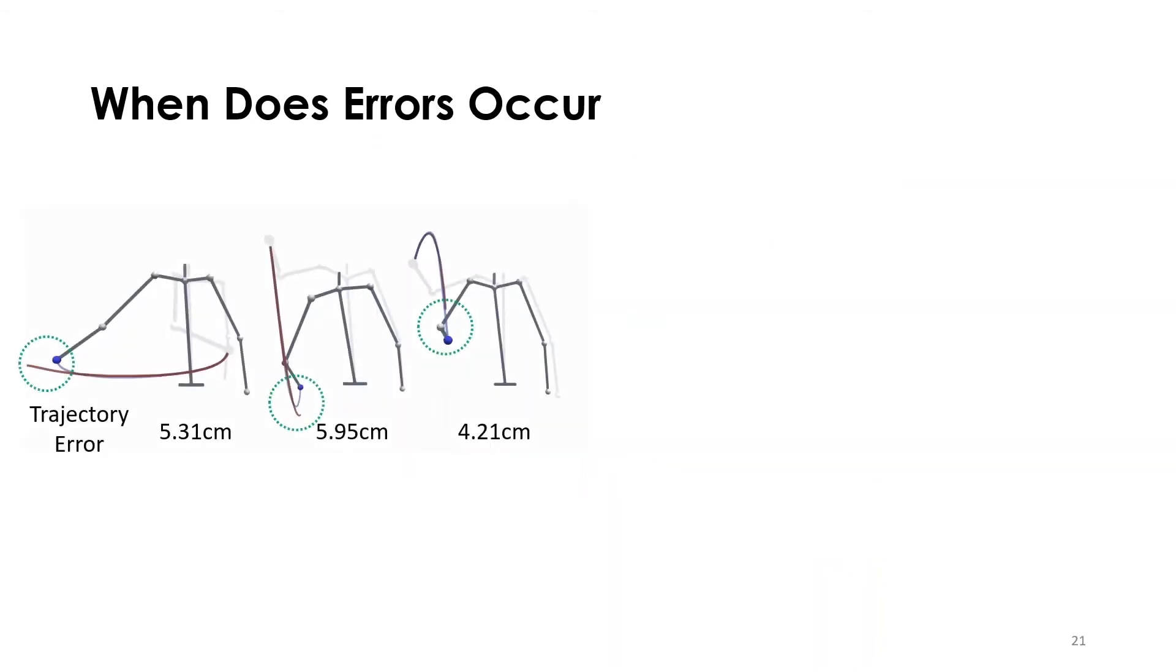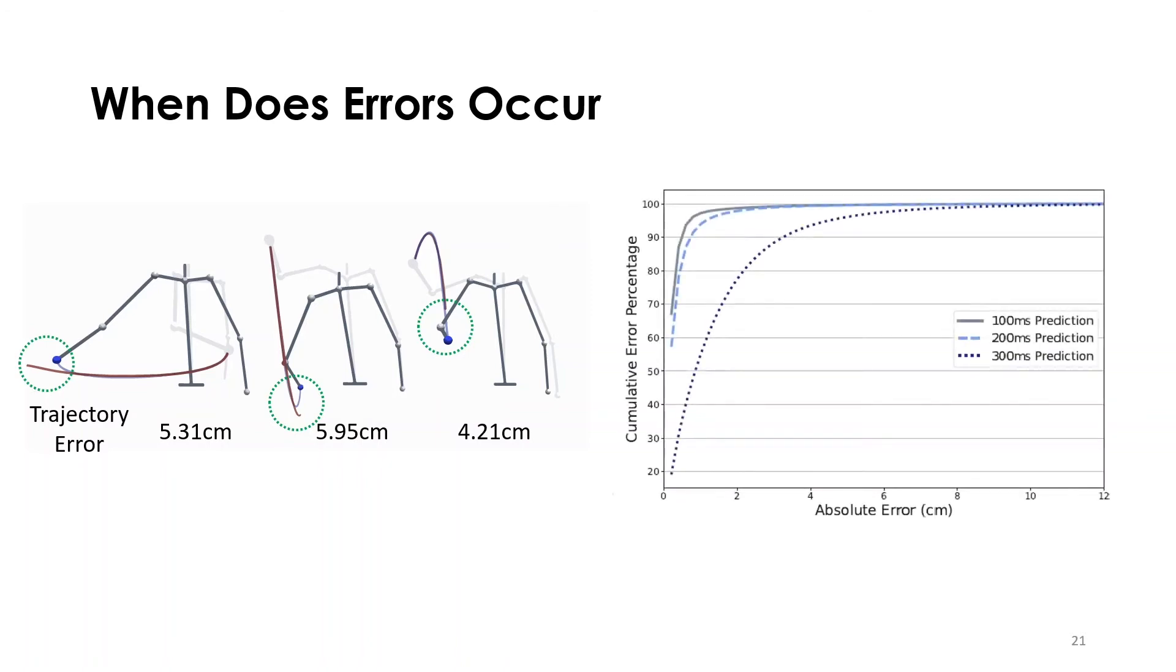Our model is not invincible to large errors. Large errors can especially happen for high prediction intervals as 300 milliseconds. However, less than 90% of the errors are still under 4 centimeters for a 300 milliseconds prediction interval.